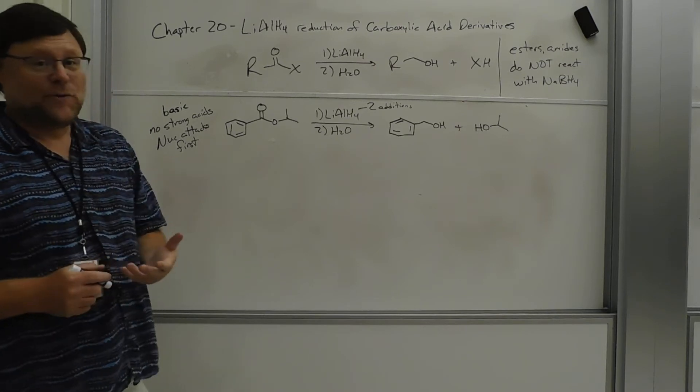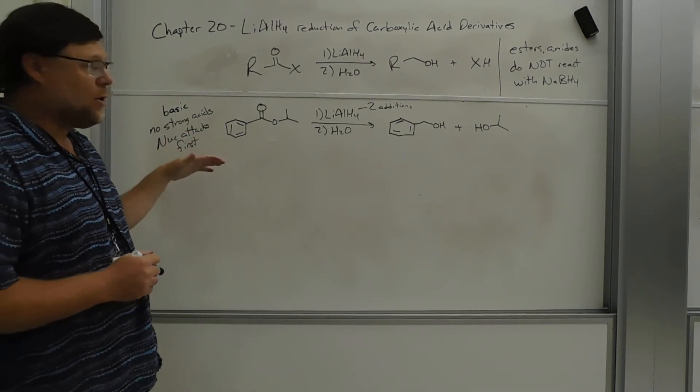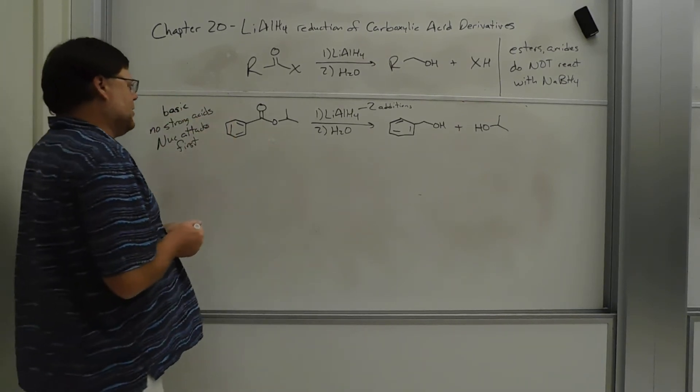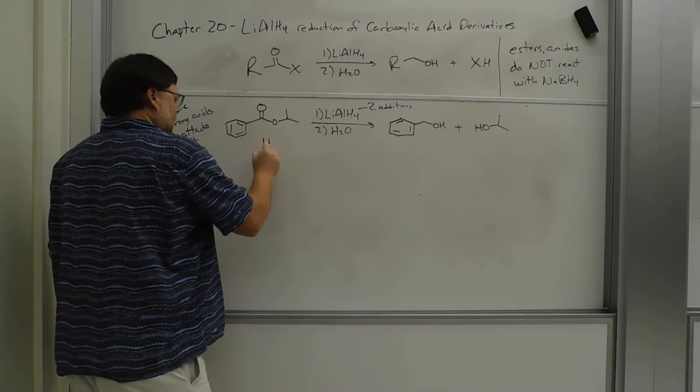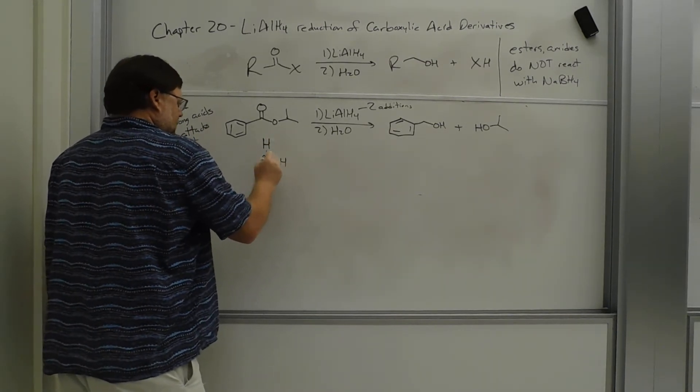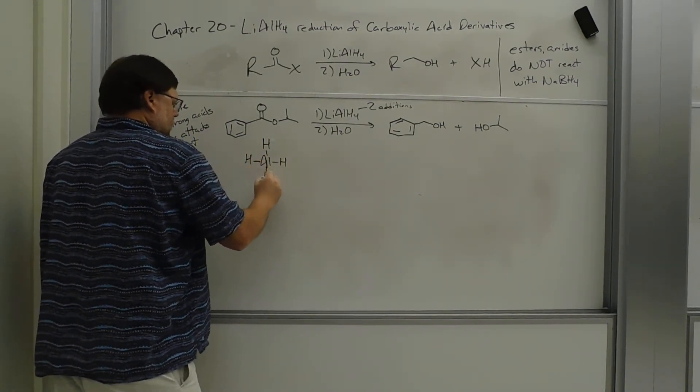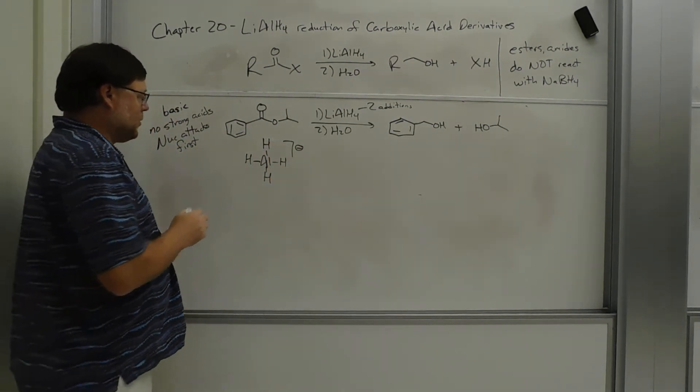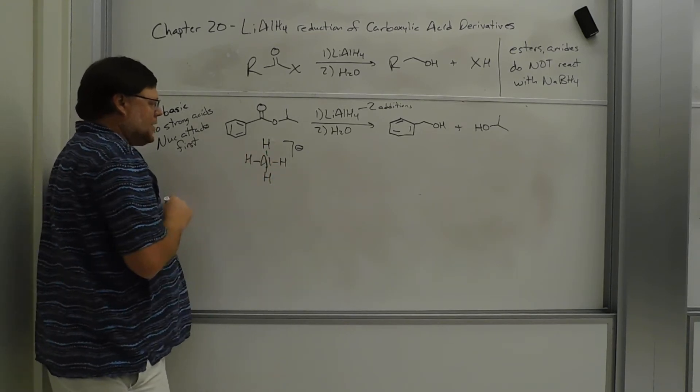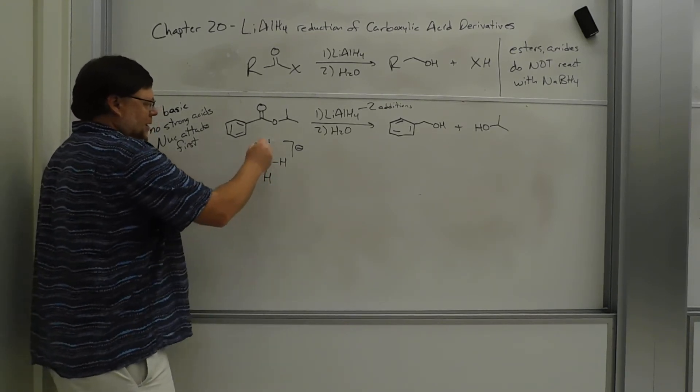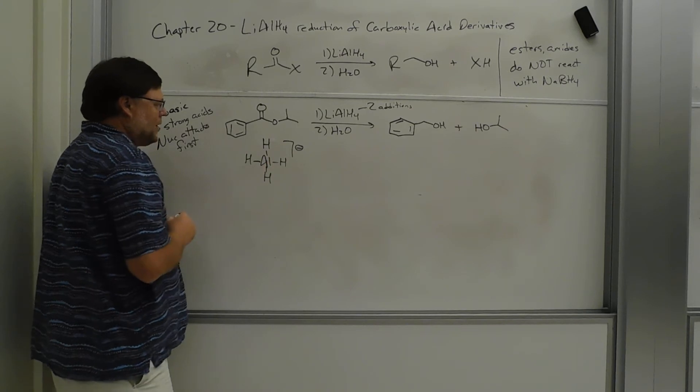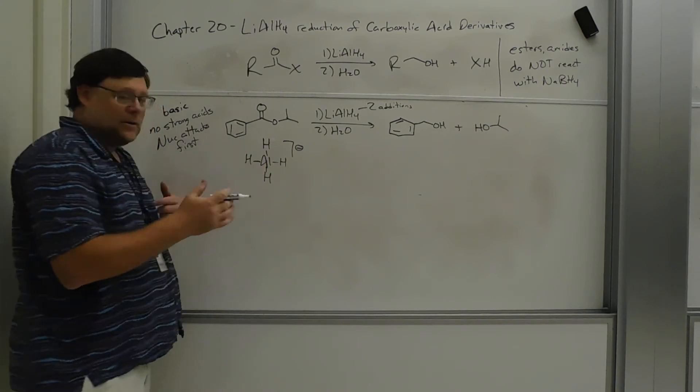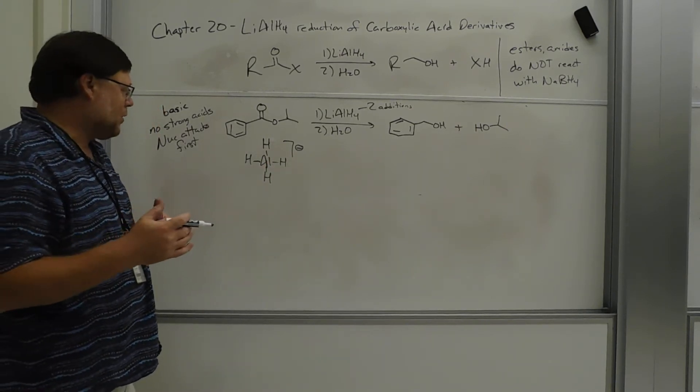I'm not going to ask you for the mechanism for this reaction, but I want to show it just to explain why you get two additions. So we're going to have aluminum hydride. So an aluminum bonded to four H's, a full negative charge. That full negative charge is distributed around the H's, and that aluminum hydrogen bond is really polar.